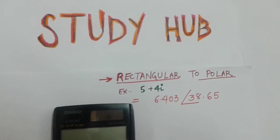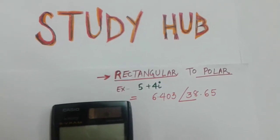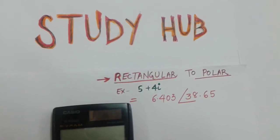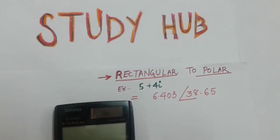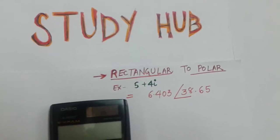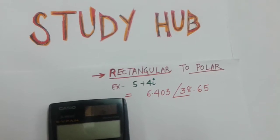Hello friends, welcome to my channel Study Hub. Today I will tell you how to convert a rectangular form into a polar form using the calculator FX-991MS. I'm using a scientific calculator, so I am taking an example.